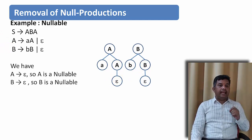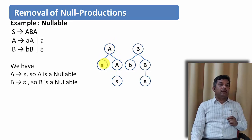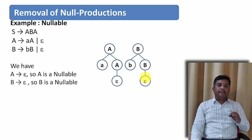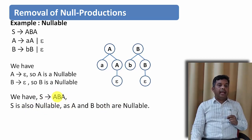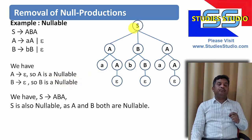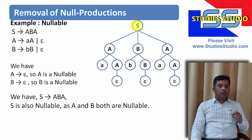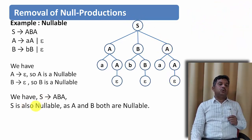Since A derives AA, we can also reach epsilon by substituting epsilon for each A. Similarly, B can derive epsilon the same way. So A and B are both nullable variables. Now for the production S derives ABA, since A and B are both nullable, S is also nullable — we can derive the null string starting from S by substituting epsilon for each of A, B, and A.